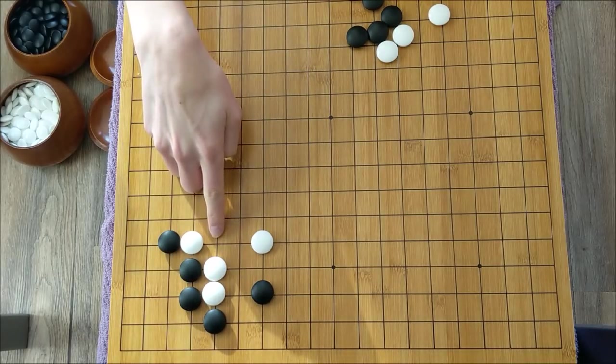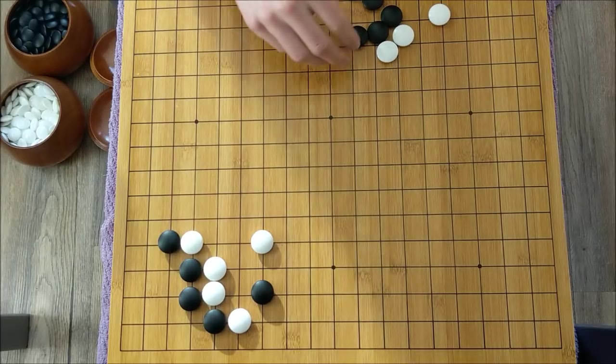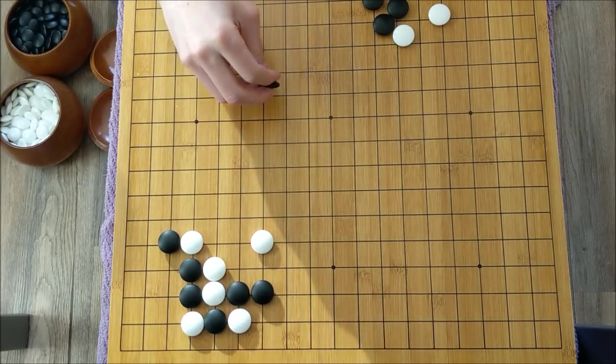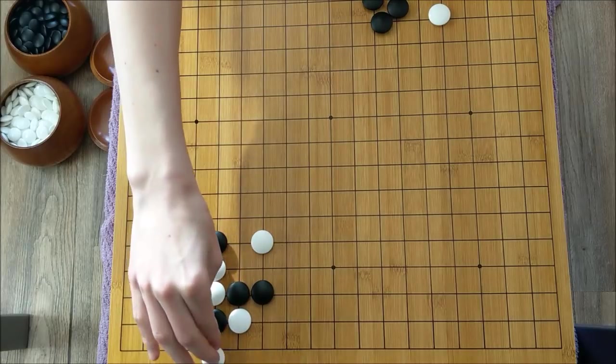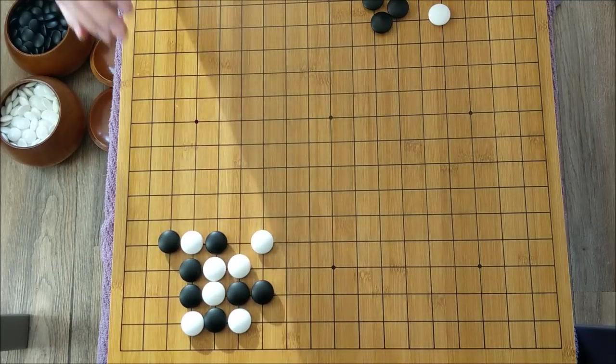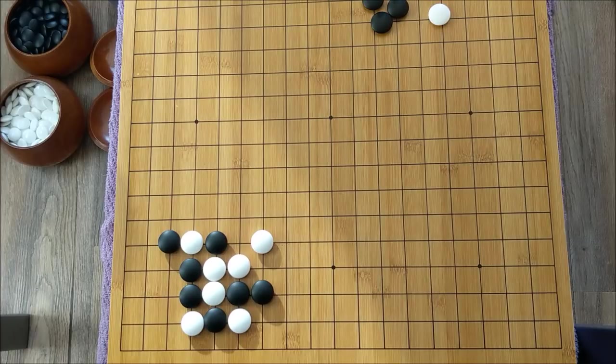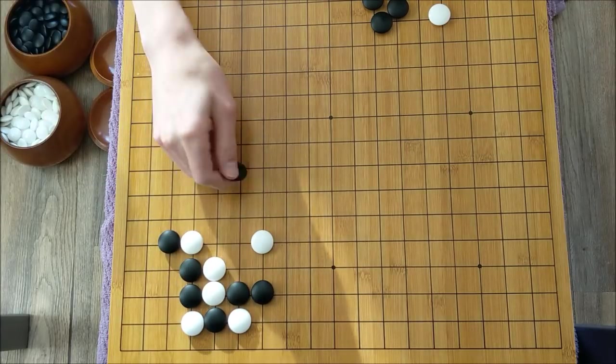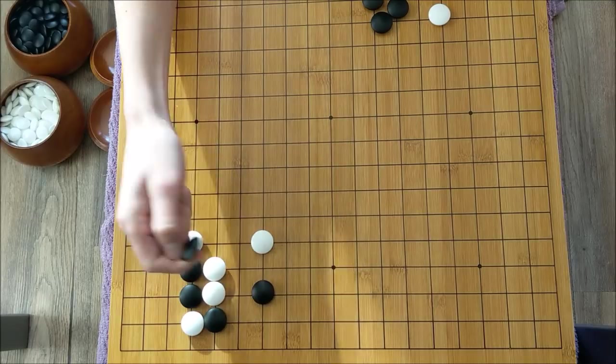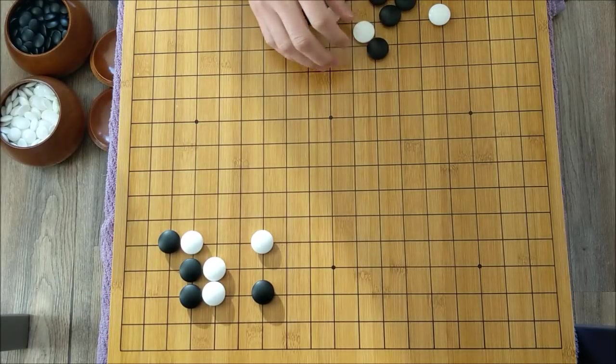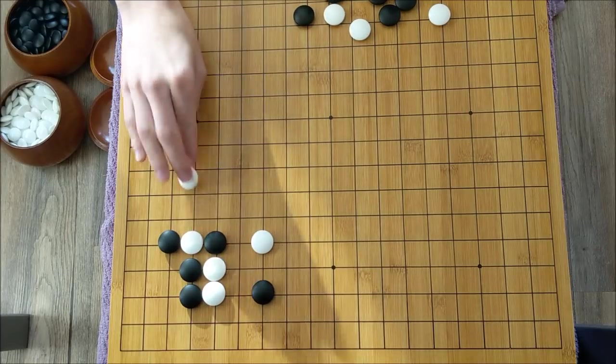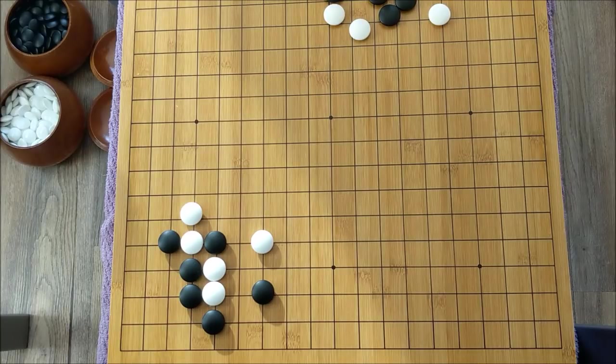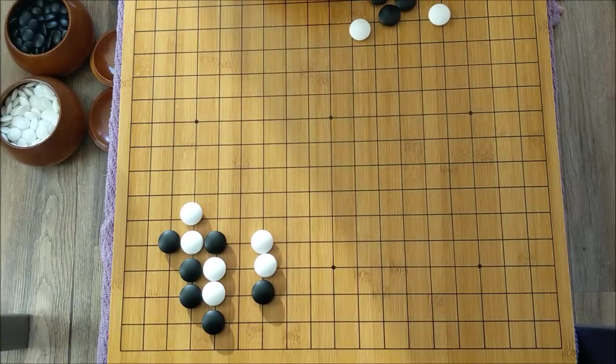But with this liberty free, there is not a real way we can link up. Because after this move, black is continually being separated. And because this black stone is an atari, this loses a lot of its edge. But if we make this exchange first, making sure that that situation is similar to our previous problem, this becomes the key point in the shape. And white has no choice but to let black connect.